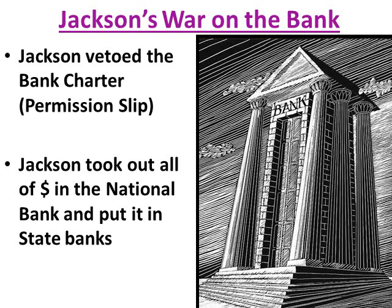The last thing to talk about is Jackson's war on the bank. Jackson hated the National Bank because he felt it only helped the wealthy. To kill the bank, he did two things. First, he vetoed the bank charter — a charter being like a permission slip the bank needed to stay open. Second, he took all the money out of the National Bank and put it into state banks. Without money, a bank can't run. So Jackson officially closed the National Bank by vetoing the charter and moving the funds to state banks.